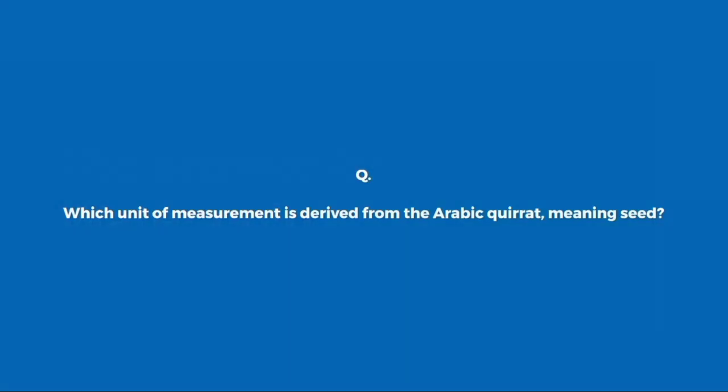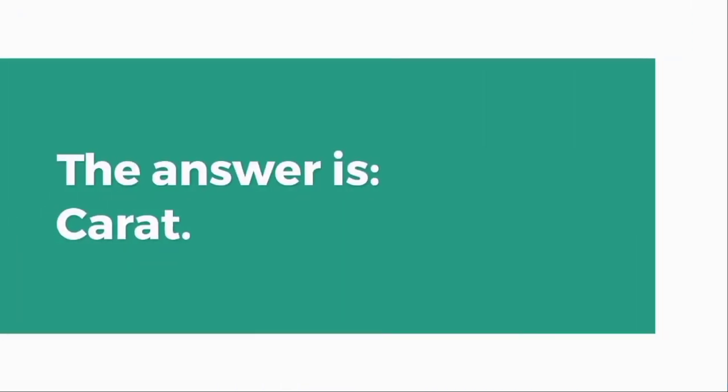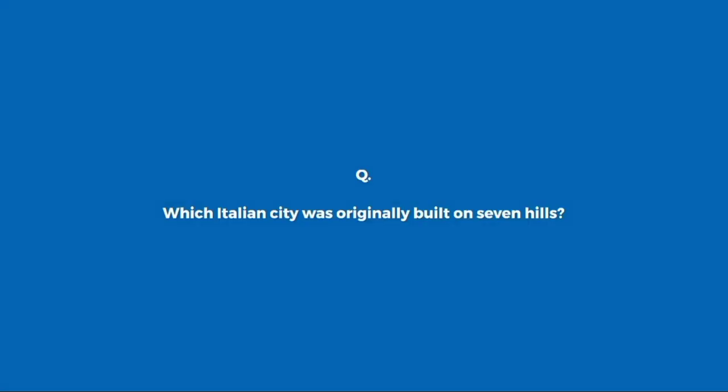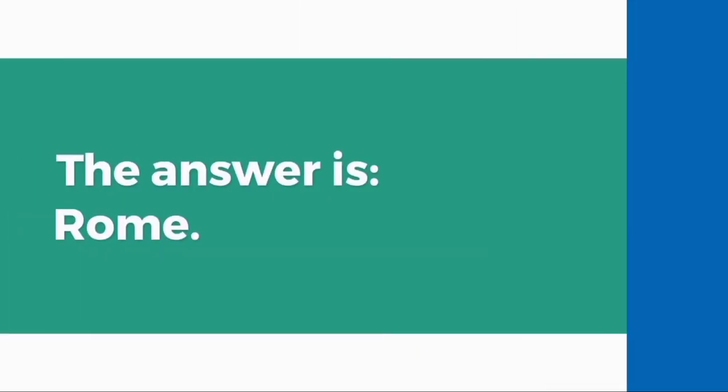Which unit of measurement is derived from the Arabic word meaning seed? Carat. Which Italian city was originally built on seven hills? Rome.